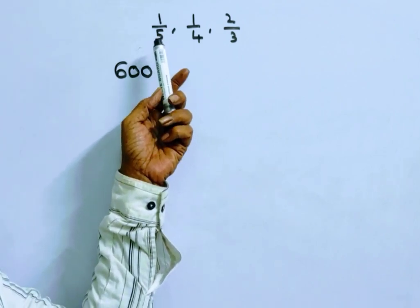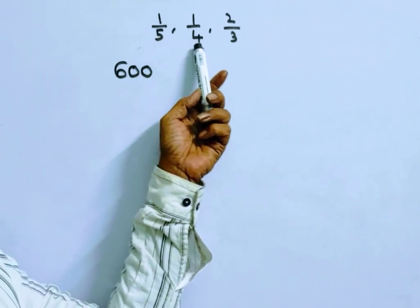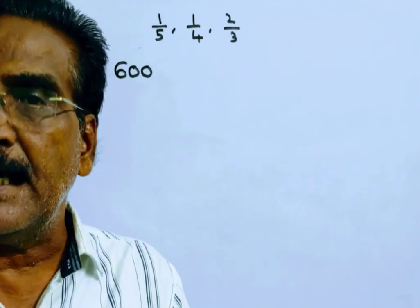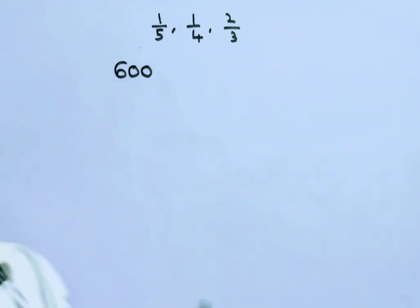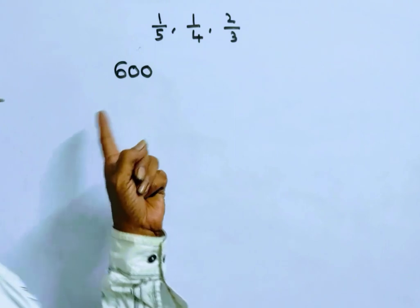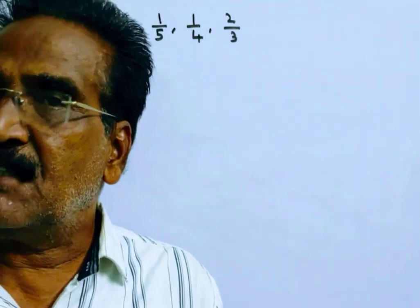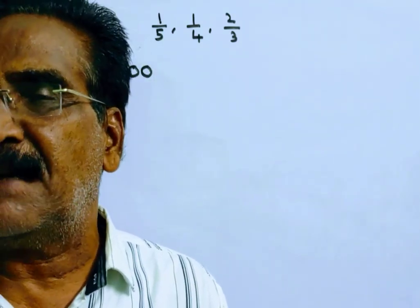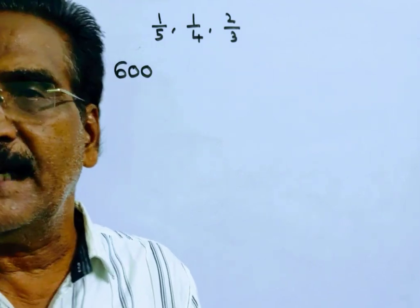That is a multiple of 60. The LCM of 5, 4, 3 is 60, so I am taking the multiple of 60, say 600. But it is given as 3600, so in the final answer let us multiply by 6. We will get the correct answer.